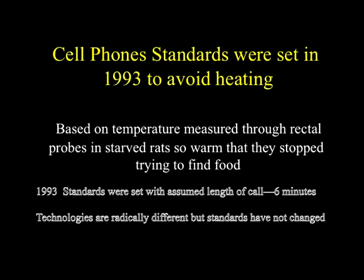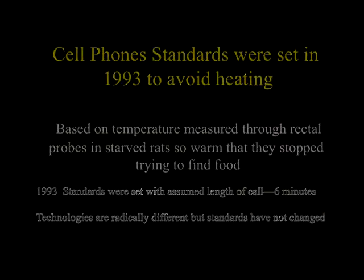Cell phone standards that govern every one of the world's 5.5 billion cell phones today were originally set in 1993 to avoid heating. They were based on the temperature measured through rectal probes in starved rats that became so warm they stopped trying to find food. Those standards assumed the average length of a call was six minutes. Technologies and use of cell phones today are very different from 1993, and yet we use these outdated standards.